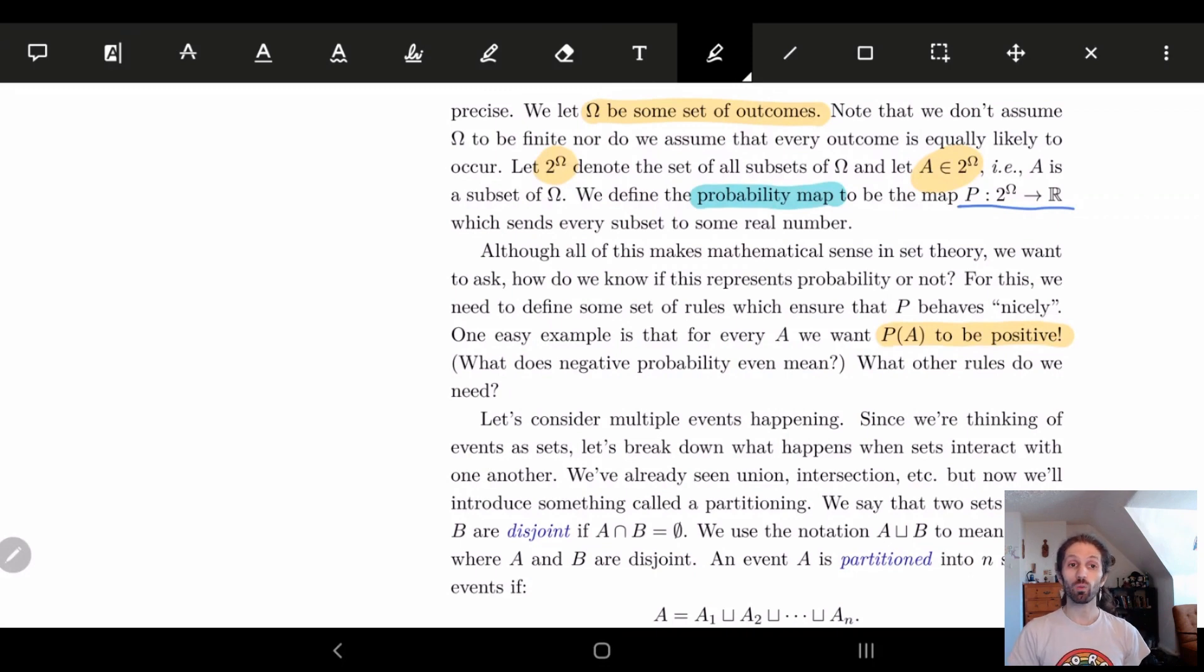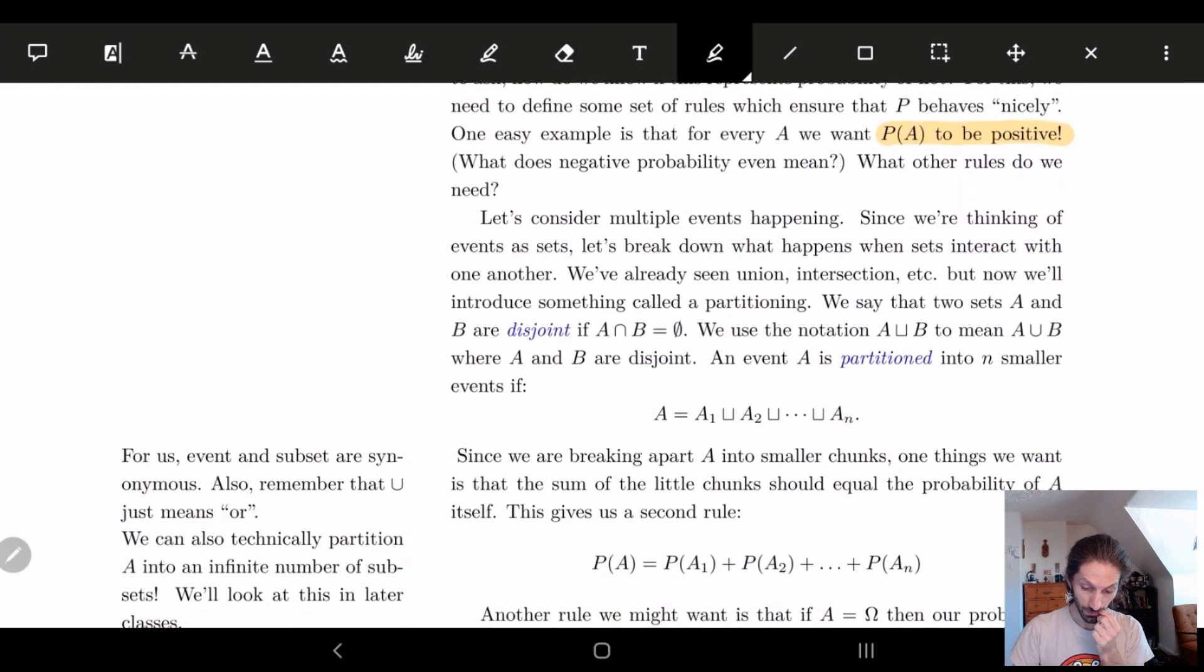What about another rule? Is there anything else we want? Well, another thing we talked about is that when we're doing unions, if the two unions are disjoint, we want their probability sum up, right? So if I have a one sixth chance of rolling a four and a one sixth chance of rolling a six, the chance that either of them will occur should be one sixth plus one sixth. And so that's the next thing that we'll probably require.